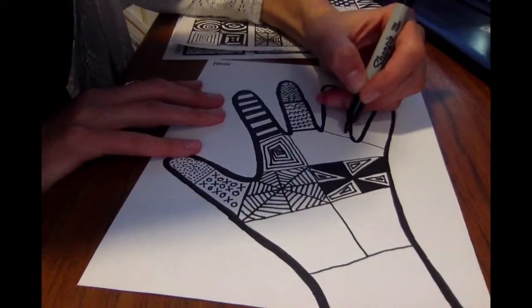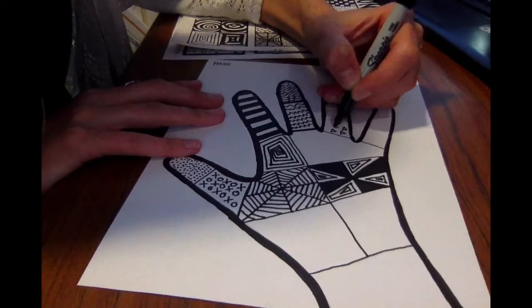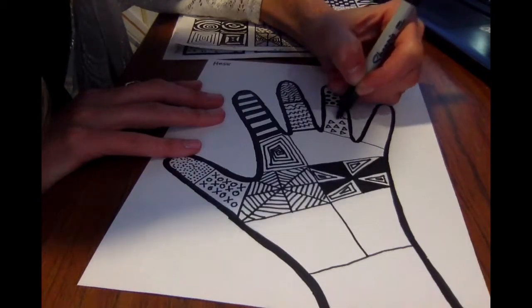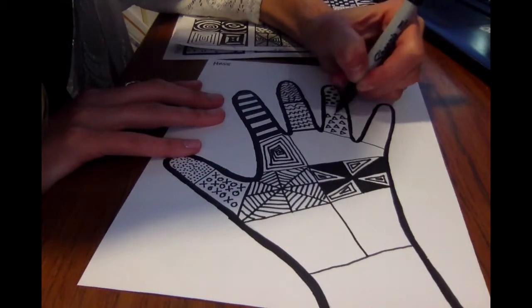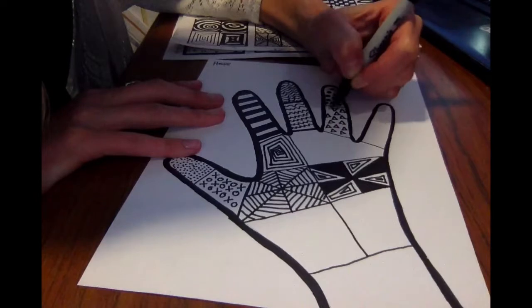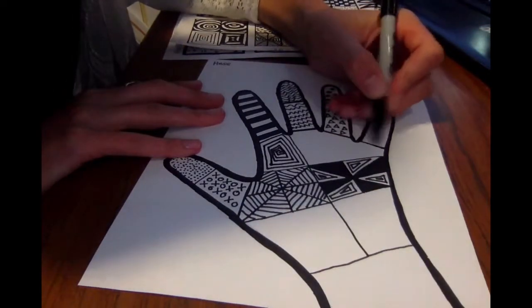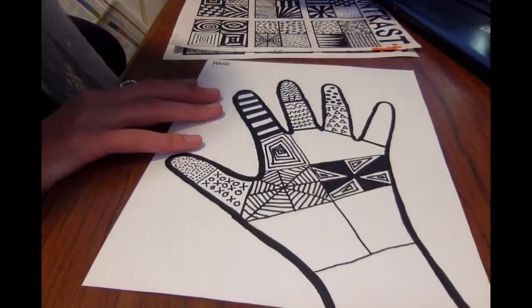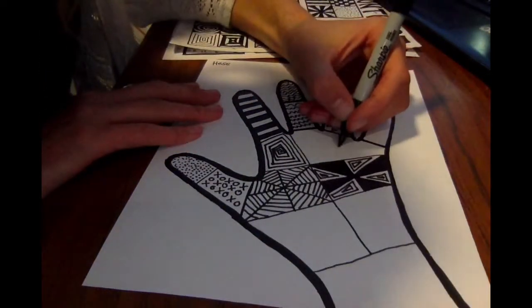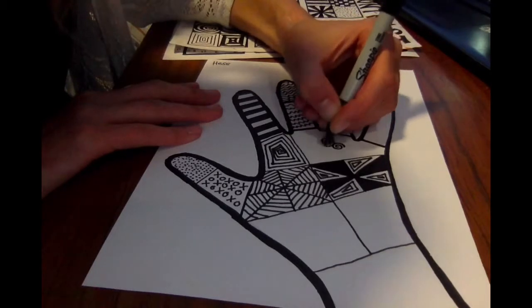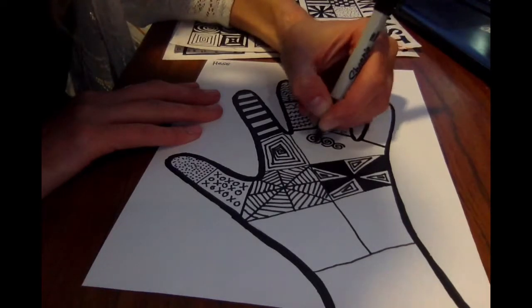For here I'm gonna make some triangles. Triangles are pretty easy. All right almost done. Only a couple more designs to go. And here I'm gonna make a little swirlies. Again I'm making them really close together.